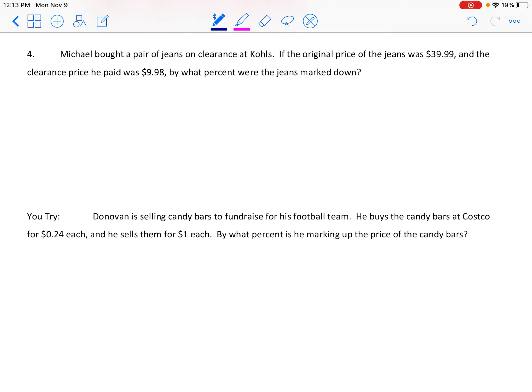Michael bought a pair of jeans on clearance at Kohl's. My favorite thing, clearance at Kohl's. The original price of the jeans was $39.99 and the clearance price he paid was $9.98. By what percent were the jeans marked down? So marked down this time is a percent decrease in the cost for the jeans. So our percent change here. These jeans were originally $39.99, so that's the price we want to put on the bottom. And then we went down to $9.98. So $9.98 is going to go first, minus the $39.99.